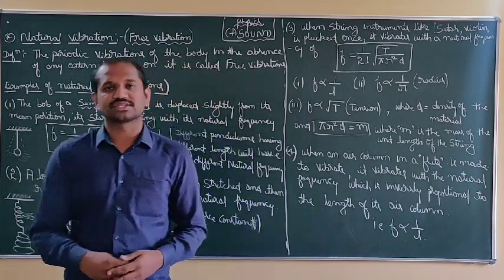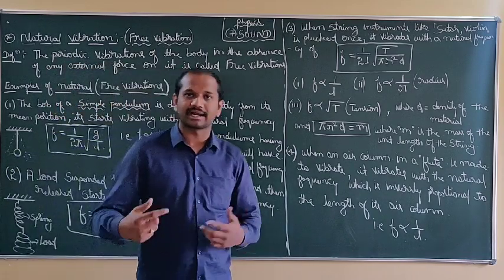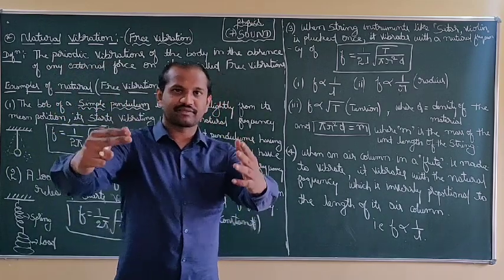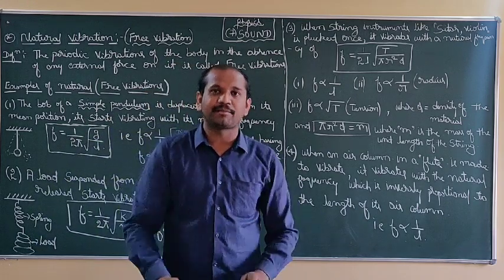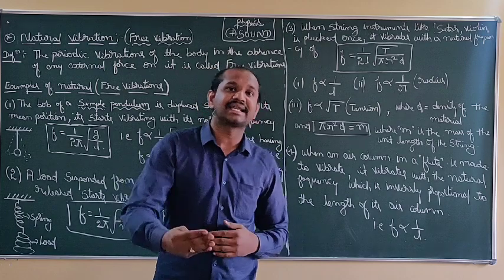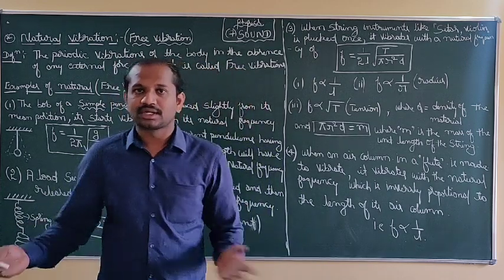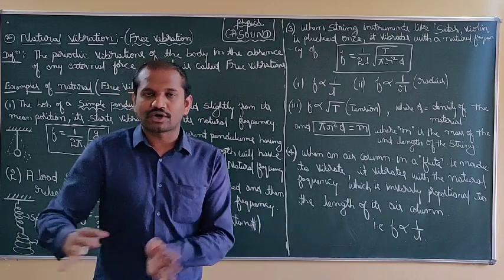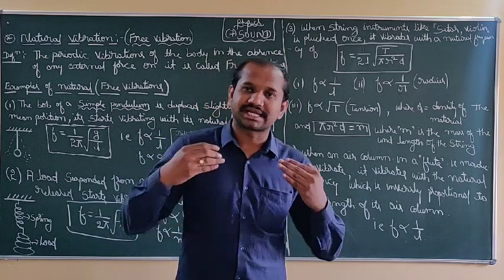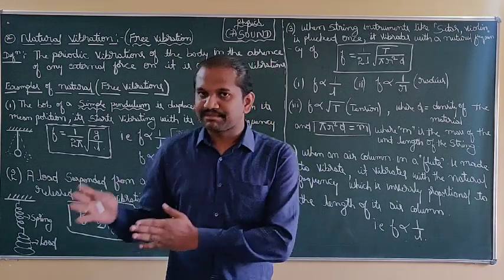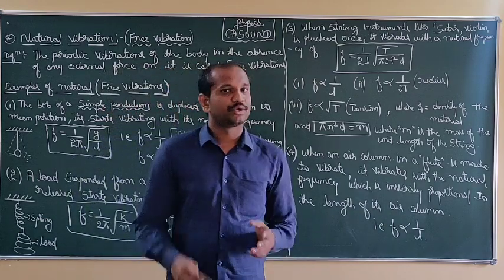Next, coming to what you mean by forced vibrations. Again we take the example of the swing and a boy. At every moment when the swing completes an oscillation, he keeps on pushing it — he is applying an external force at every moment. That keeps the amplitude from decreasing. That is what you mean by forced vibrations. The examples of forced vibrations you can see in your textbook.